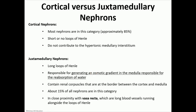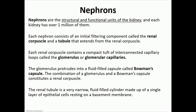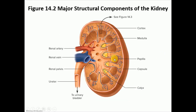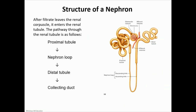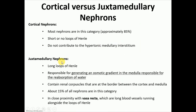About 85% of nephrons are found in the cortex — these are called cortical nephrons. They may have no loop or a very short loop, and they do not contribute to the hypertonic medullary interstitium. The juxtamedullary nephrons, which are close to the medulla (juxta means neighboring), have long loops of Henle and are responsible for the hypertonic medullary interstitium.